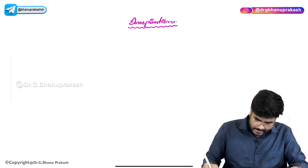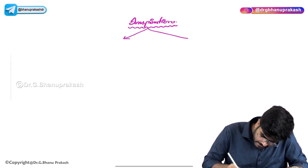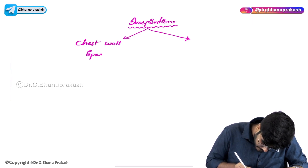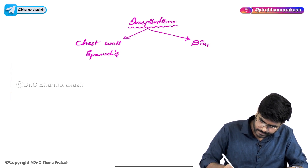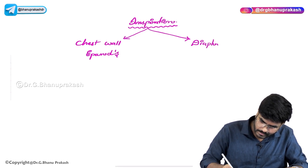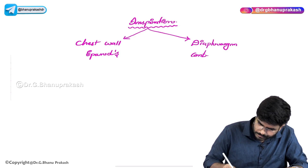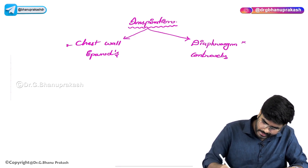How is air going to enter into the alveolus? During inspiration, you should know what events are taking place. Chest wall expands and diaphragm contracts.